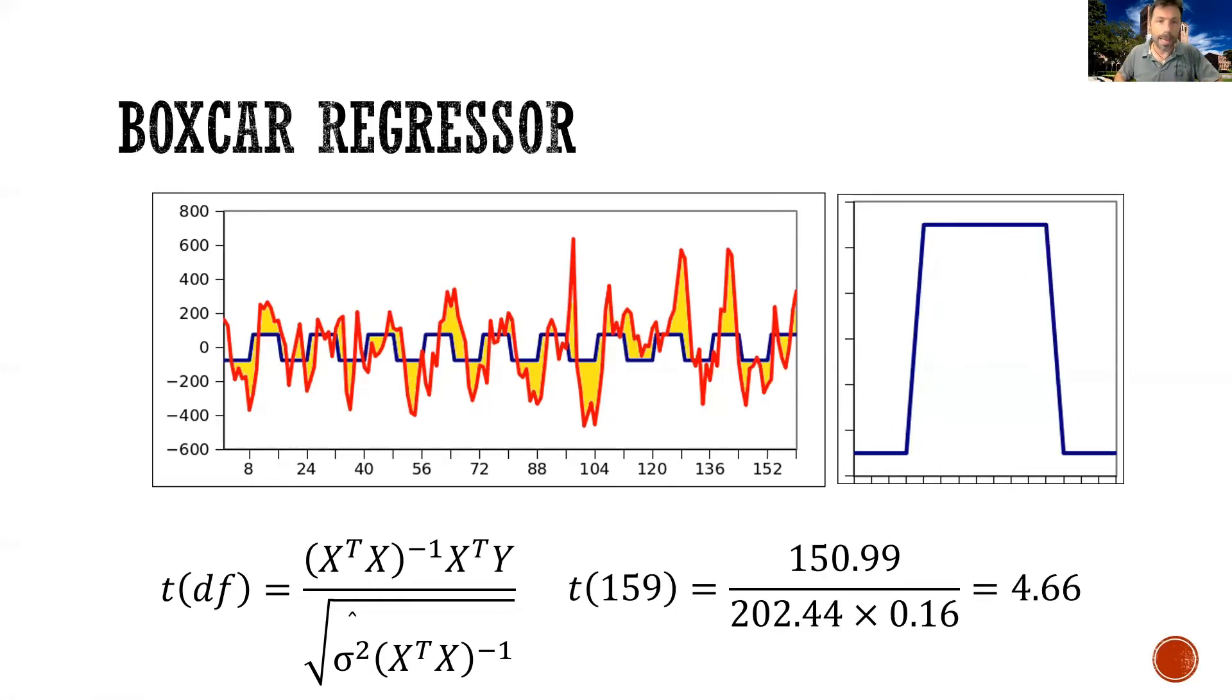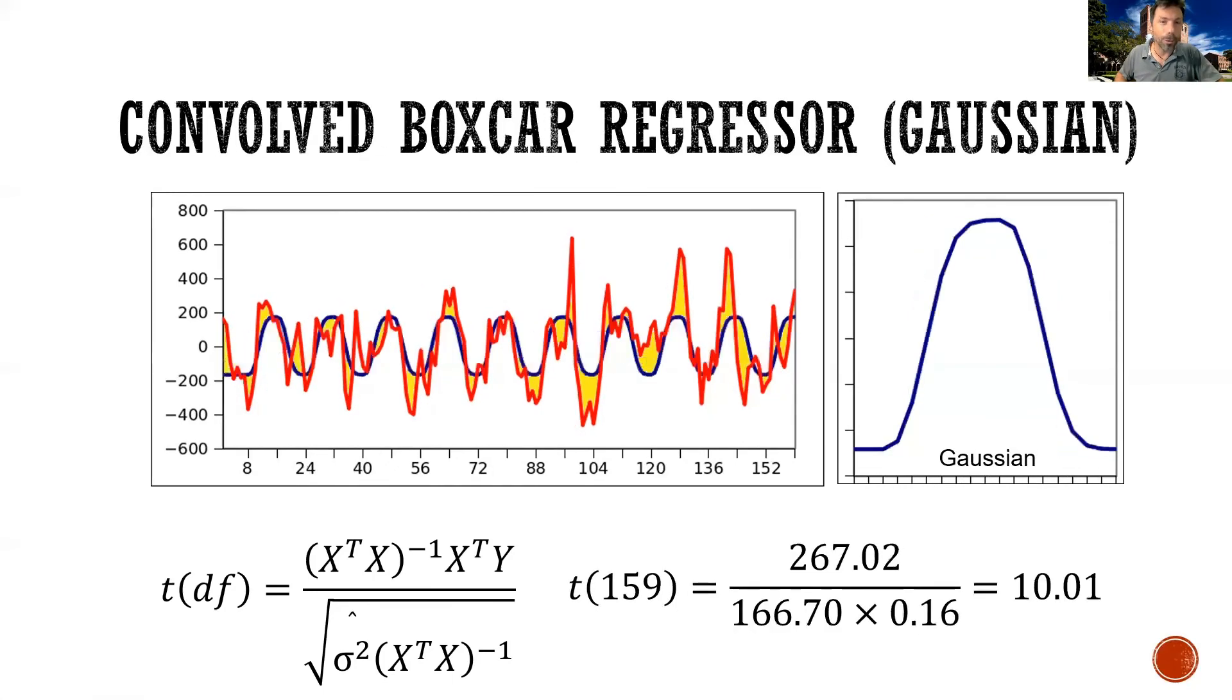And indeed, if you just look at the difference between the two, you can tell that we're reducing the amount of visual error, the amount of yellow, in other words.